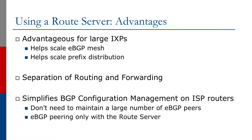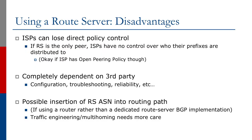The advantages of a route server are that they help scale larger Exchange Points by scaling the eBGP mesh and prefix distribution. It separates routing and forwarding, and simplifies BGP configuration management on ISP routers, meaning ISPs don't need to maintain a large number of eBGP peers. Of course, there are a few disadvantages to consider as well. ISPs could lose direct policy control — if the route server is the only peer, ISPs have no control over who the prefixes are distributed to. This is fine with an open peering policy, but with selective or restricted peering policy, it's not clear if a route server would be useful.